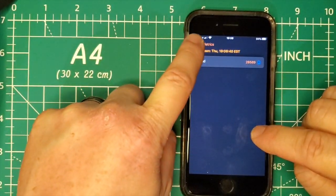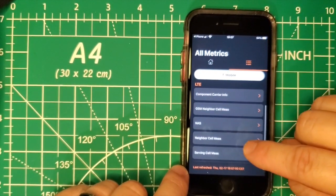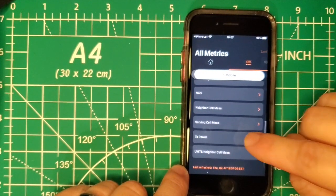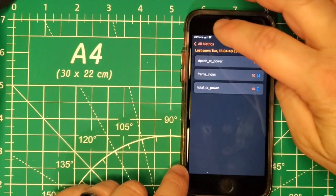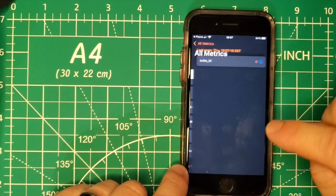If we scroll down, we have some LTE information: TX power, neighbor cells.